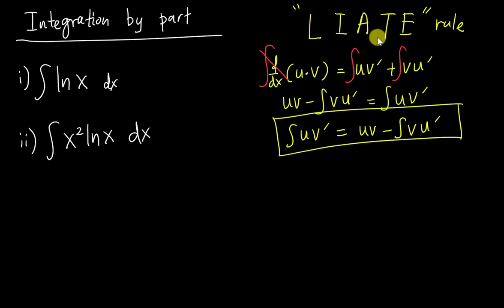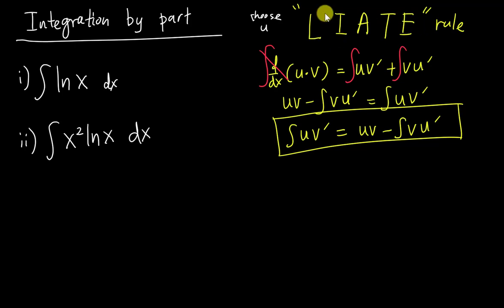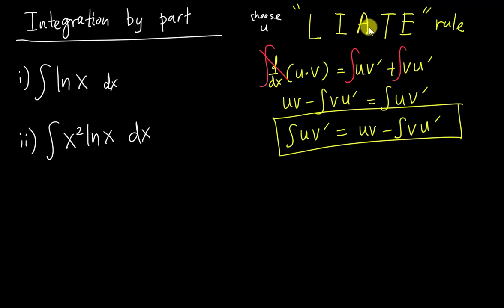The LIATE rule helps you choose the u value. You follow the priority: L comes first — whenever you see L, you choose it. If you don't have L, choose I, then A, and so on. L stands for logarithm, so ln(x) is considered a log. I stands for inverse trigonometry.